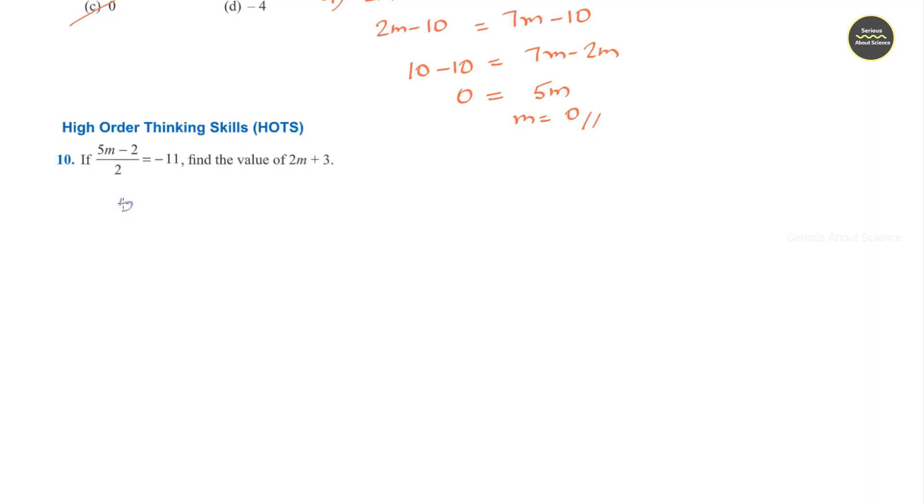So let us write 5m minus 2 divided by 2 is equal to -11. Now multiplying both sides by 2, it becomes 5m minus 2 times 2 will cancel is equal to -11 times 2, that is -22.